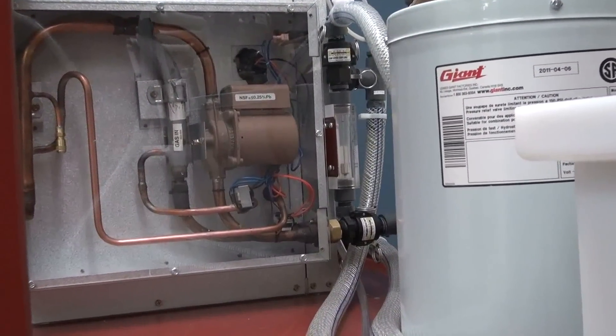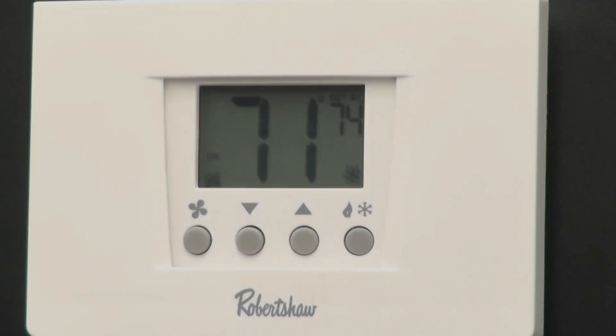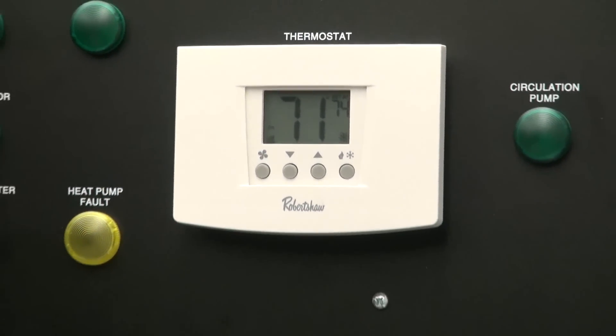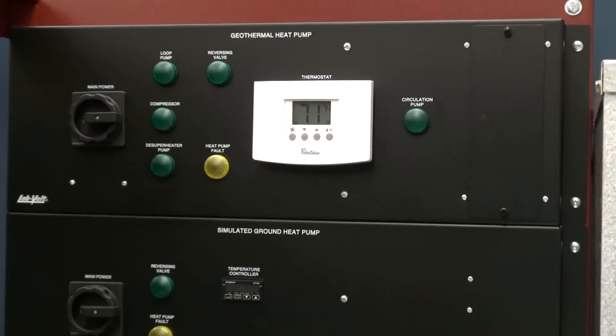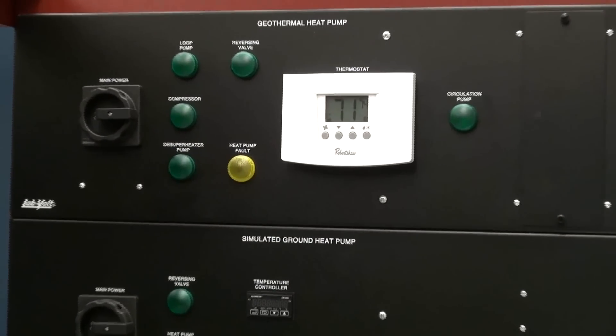The control panel includes a heat pump thermostat for cooling and heating, and indicator lights to quickly see the state of the loop pump, reversing valve, compressor, de-super heater, heat pump fault, and circulation pump.